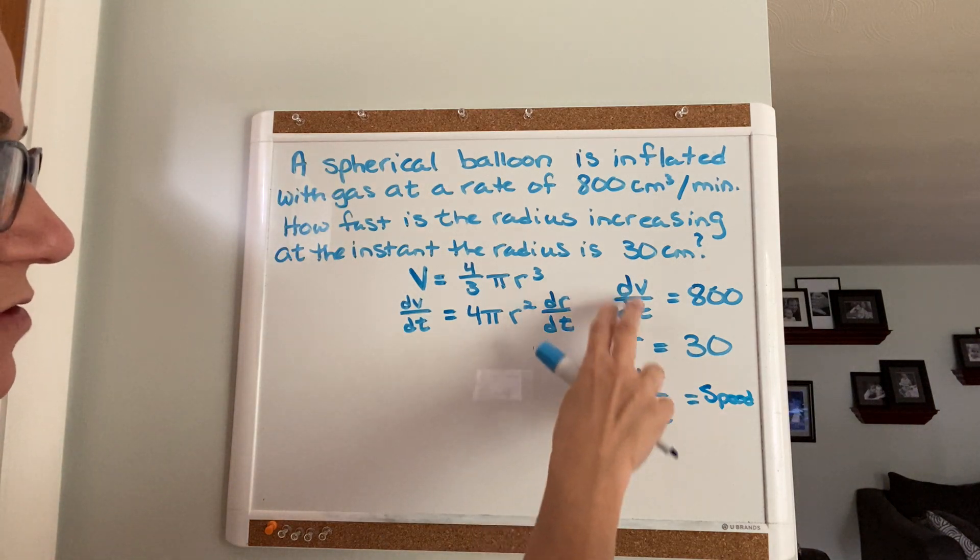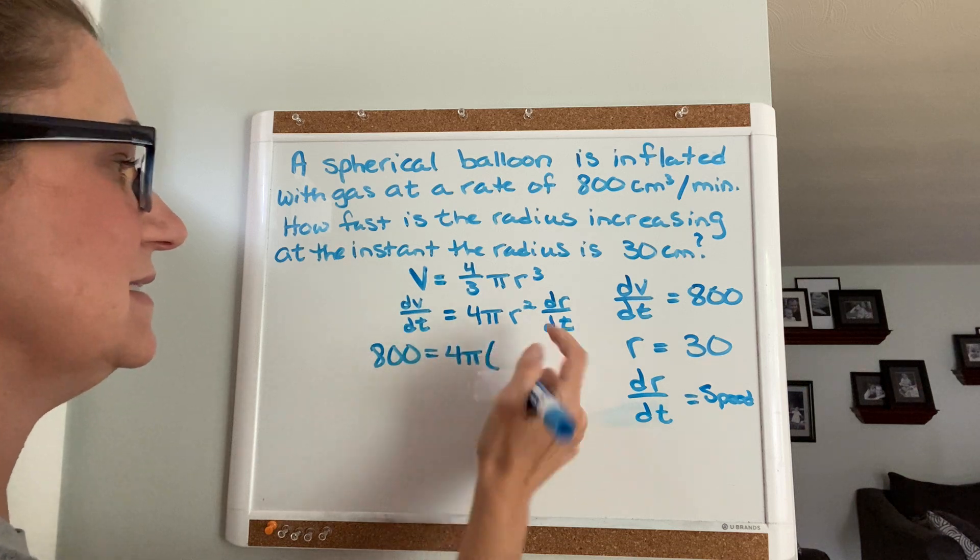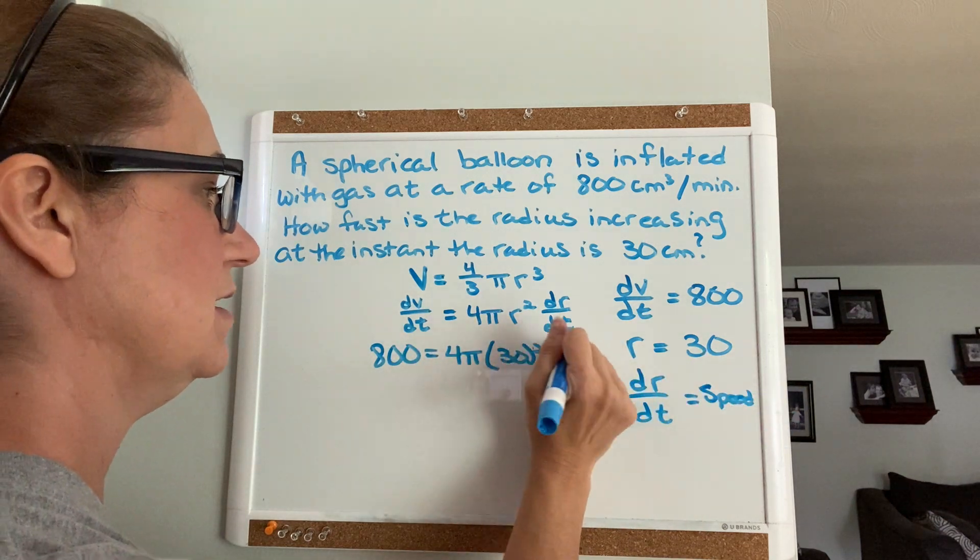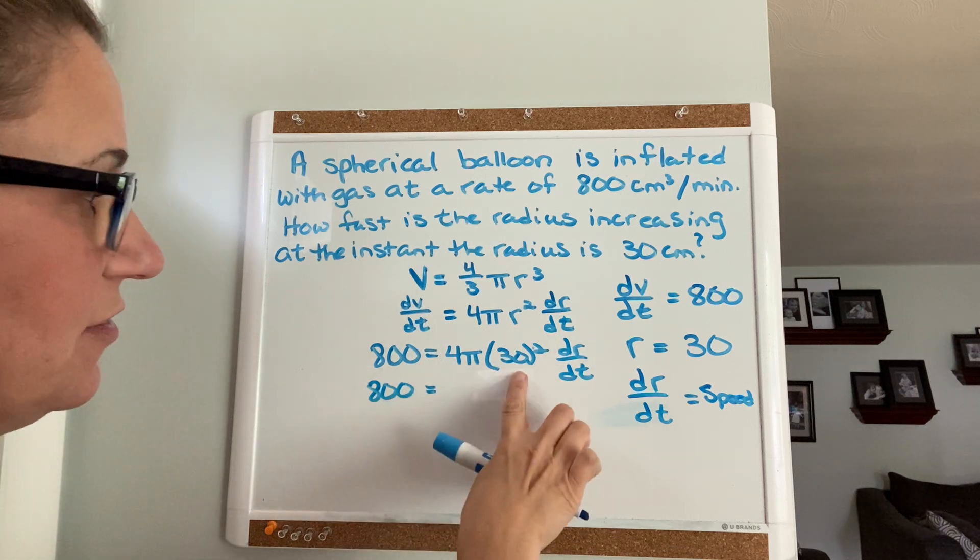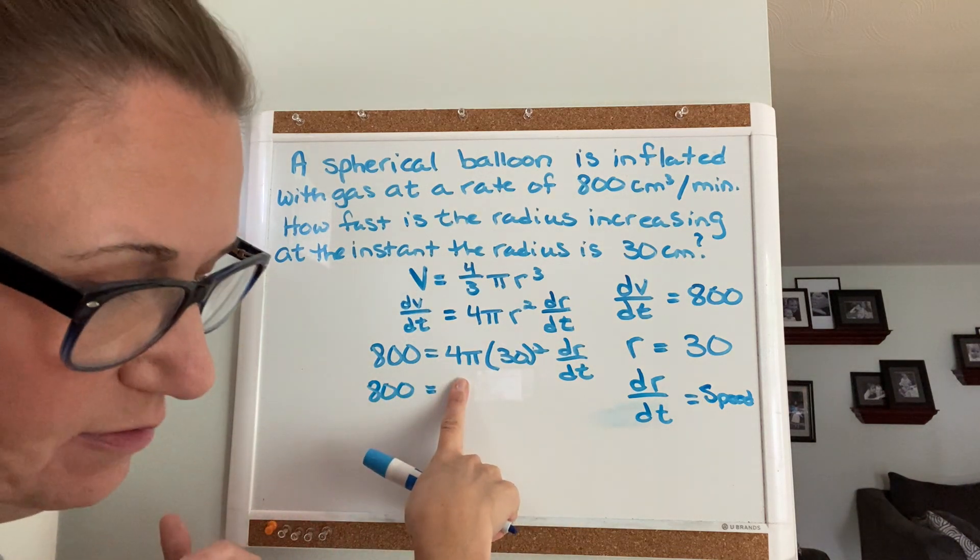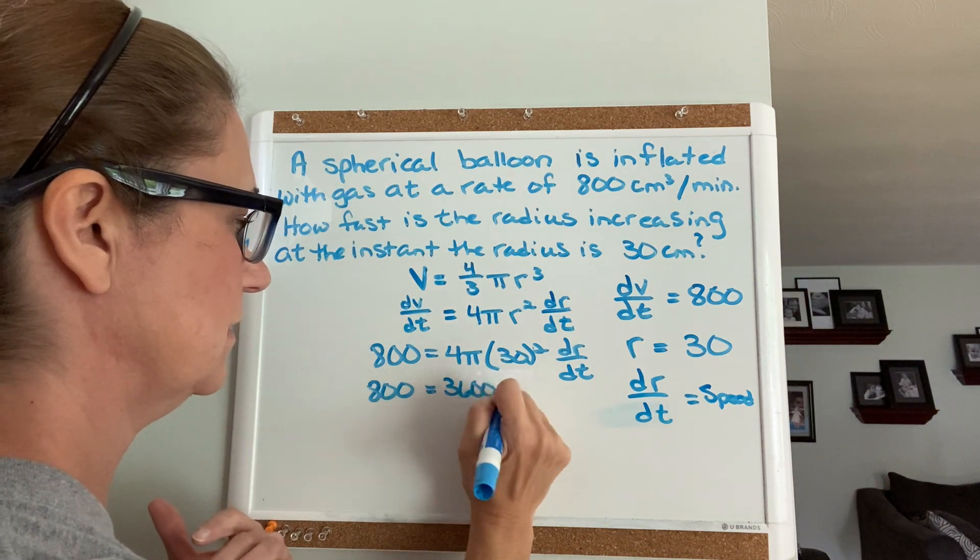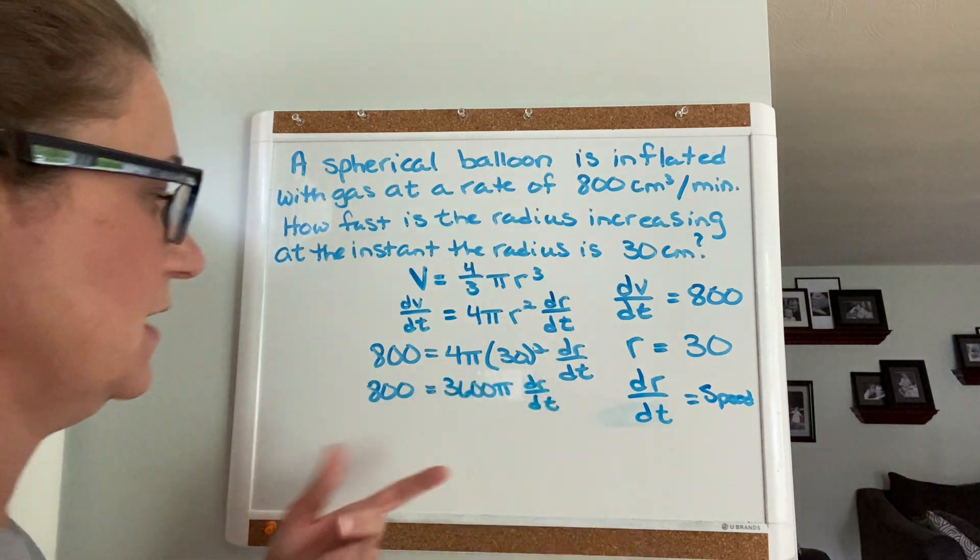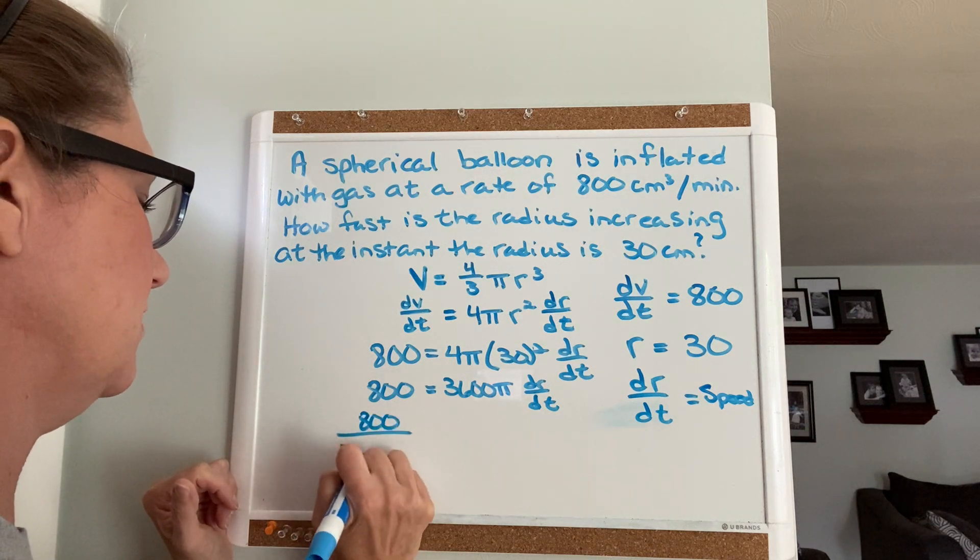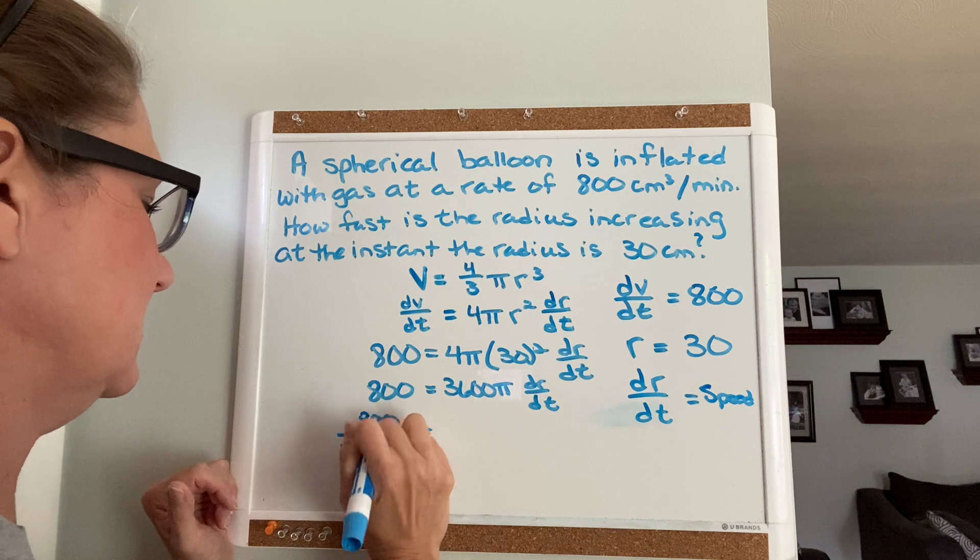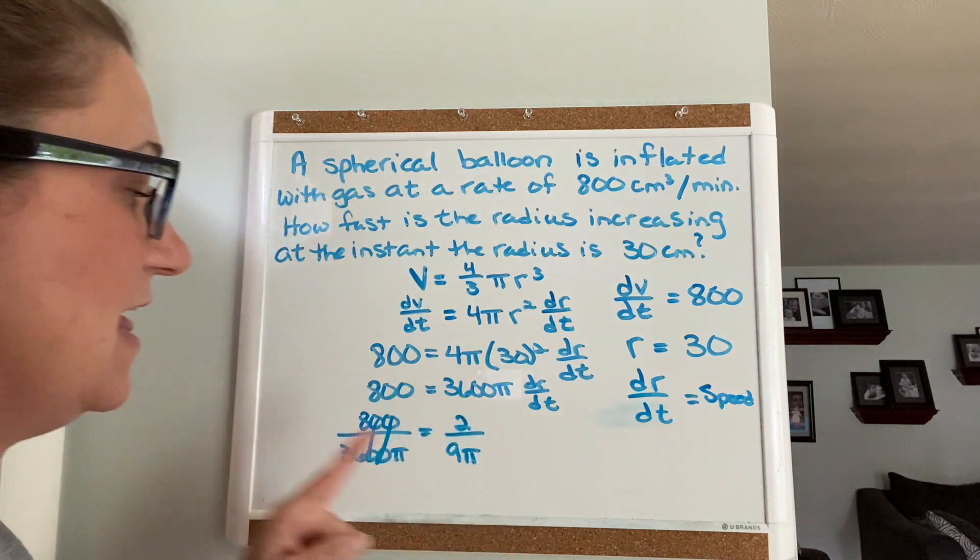So let's plug in what we know. dV/dt is 800, that equals 4π times the radius squared, so 30 squared, dr/dt. So you end up with 800 equals - now 30 squared, that's 900 - times 4, so 3600π dr/dt. If I divide both sides by 3600π, you get 800 over 3600π. Cross these zeros out, and then 8 and 36 are both divisible by 4, so you get 2 over 9π. That's your exact answer.